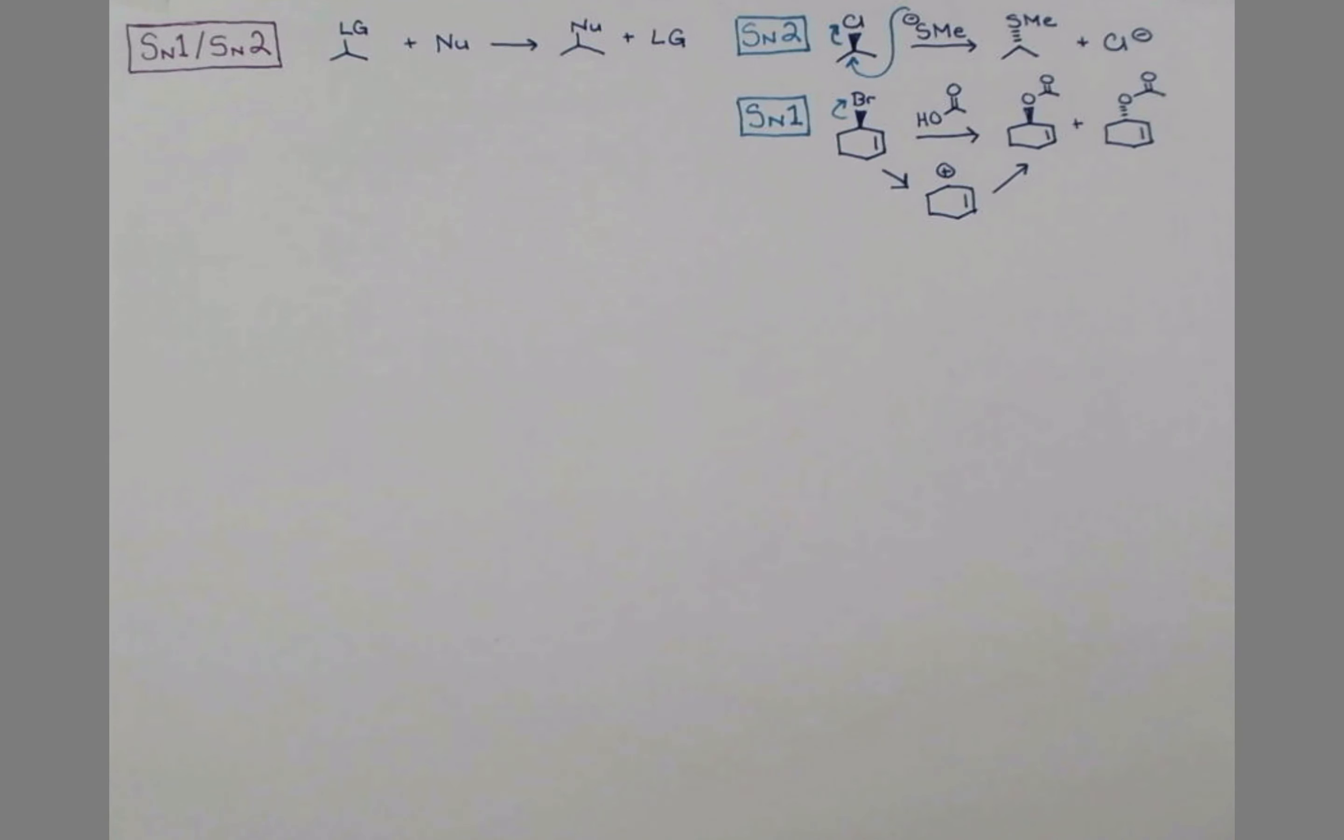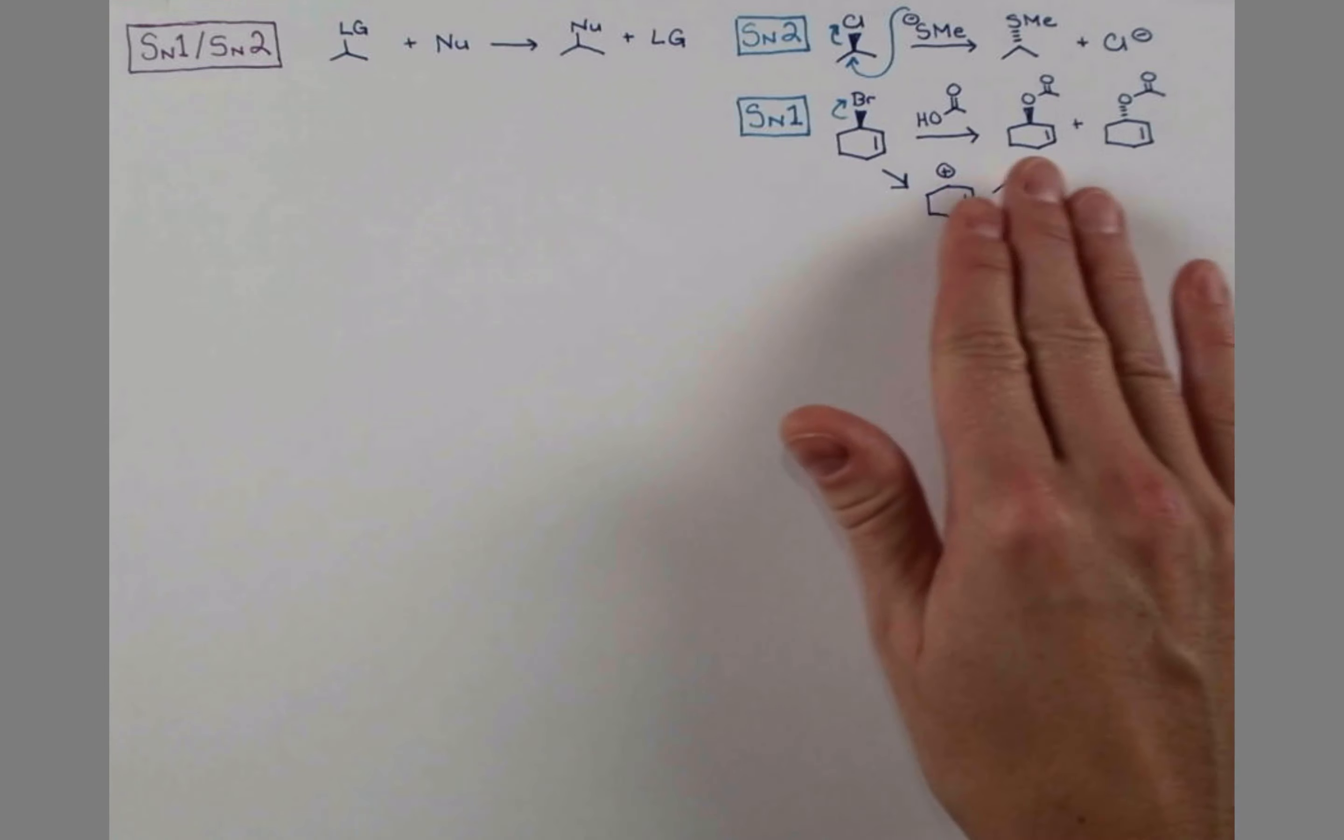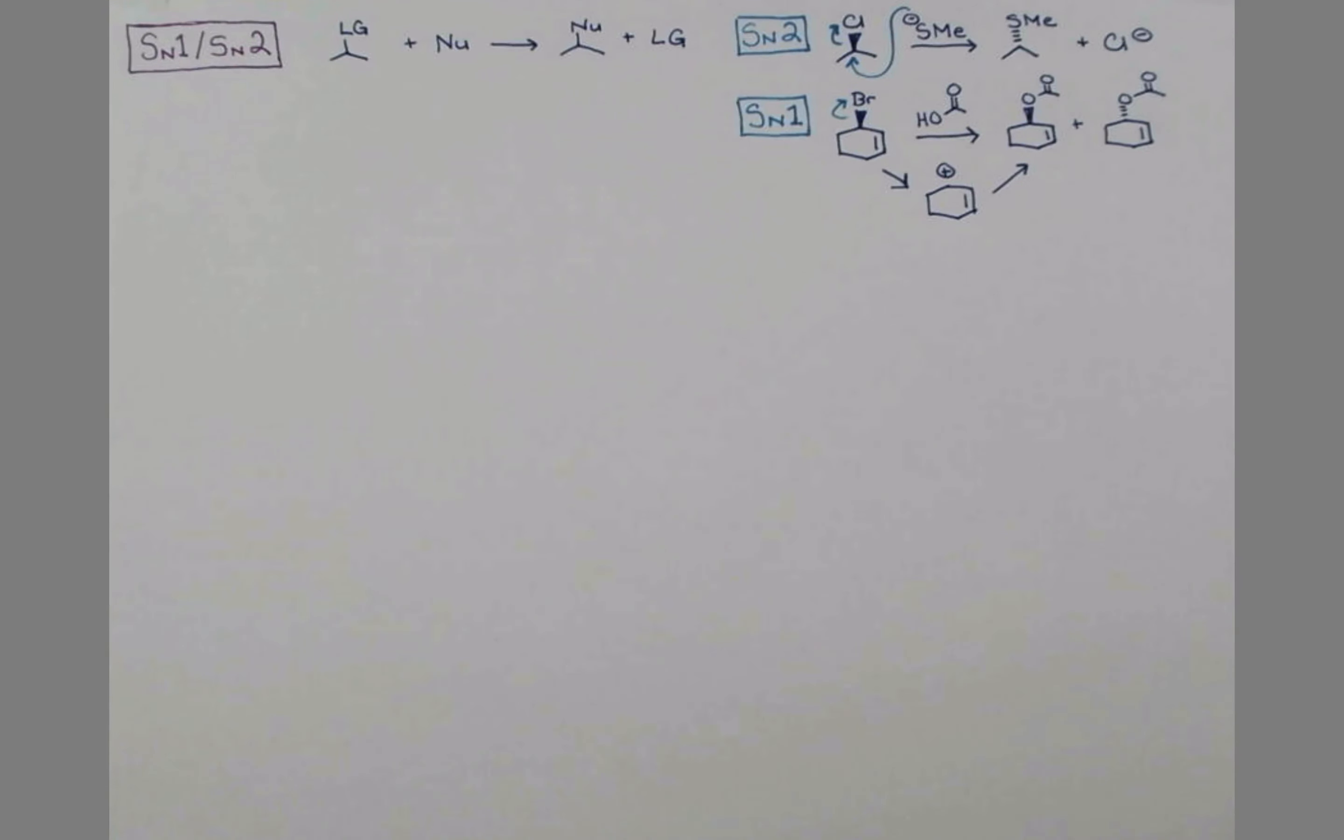If the incoming nucleophile approaches from the top, we get retention of configuration. If it comes through the bottom, we'll get this inversion of configuration. Since each of these mechanisms gives rise to very different stereochemistry of products, it's important that we're able to distinguish whether an SN1 or SN2 mechanism is going to occur. And there are a few factors that will go into this determination.